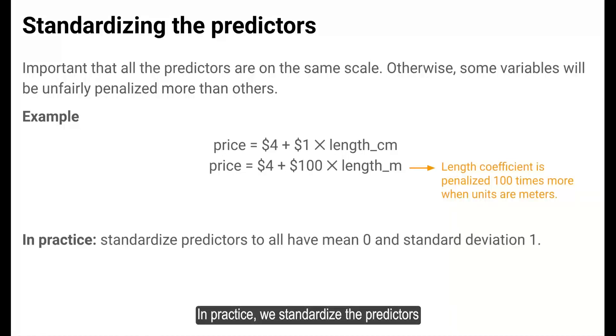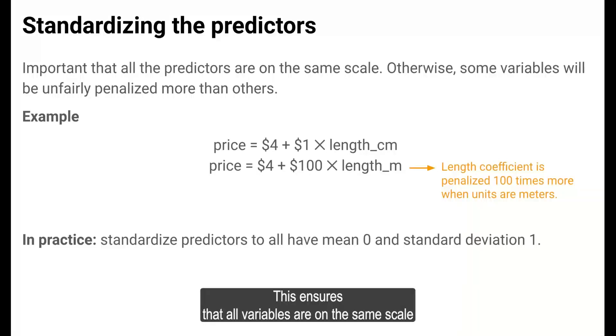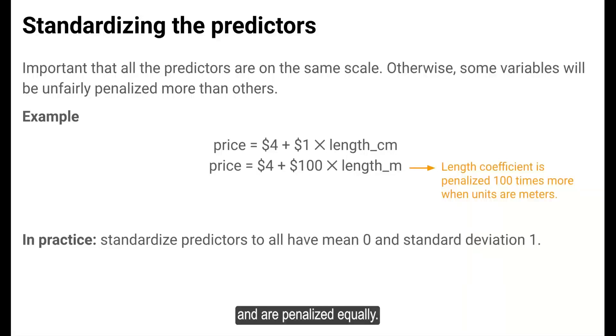In practice, we standardize the predictors so that they all have mean 0 and standard deviation 1. This ensures that all variables are on the same scale and are penalized equally.